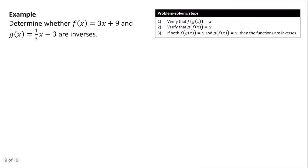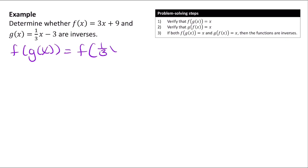Let's try an example. Let's determine whether f of x equals 3x plus 9 and g of x equals one-third x minus 3 are inverses. I'm going to start by figuring out f of g of x. So f of g of x is f of one-third x minus 3. I'm going to go to f and plug in one-third x minus 3 for x, giving me 3 times one-third x minus 3, plus 9.